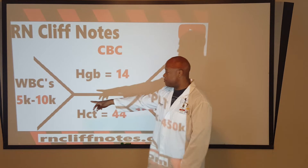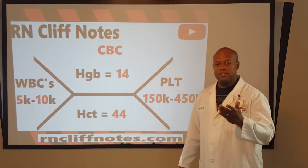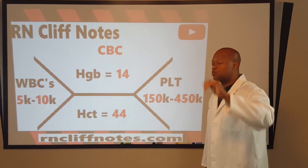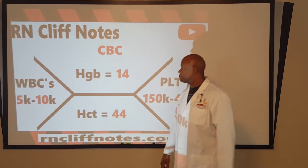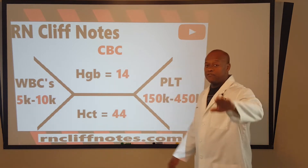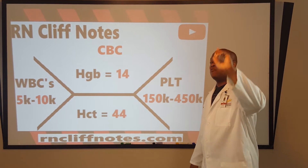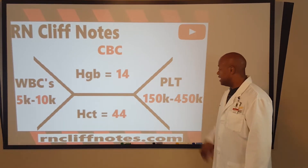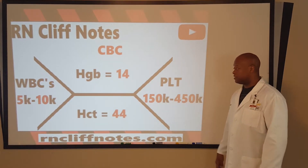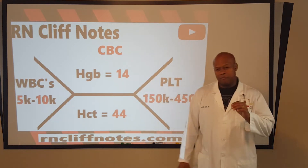We've got our WBCs — our white blood cells. Another name for those is leukocytes. And how about the red blood cells? That's what this part is talking about up and down — another name for red blood cells is erythrocytes. That leaves the platelets over here, 150 to 450.